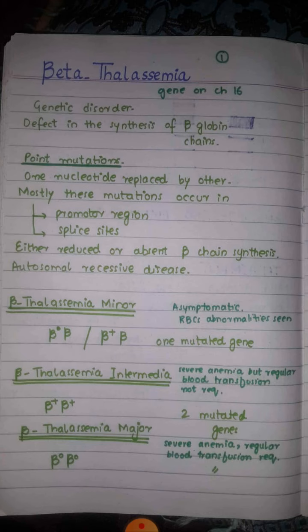Beta thalassemia is of three types: beta thalassemia minor, beta thalassemia intermediate, and beta thalassemia major. In beta thalassemia minor, one gene is mutated — either on the maternal or paternal chromosome. The person will be beta-zero/beta or beta-plus/beta. Beta-zero means no beta globin chains are formed; beta-plus means some are formed but in reduced numbers. Beta thalassemia minor is mostly asymptomatic.